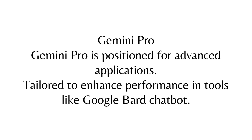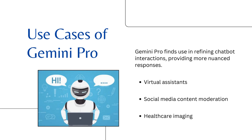Gemini Pro is the second version. This version is positioned for advanced applications and is tailored to enhance performance in tools like Google BARD chatbot. It also helps in virtual assistance, social media content moderation, and healthcare imaging.